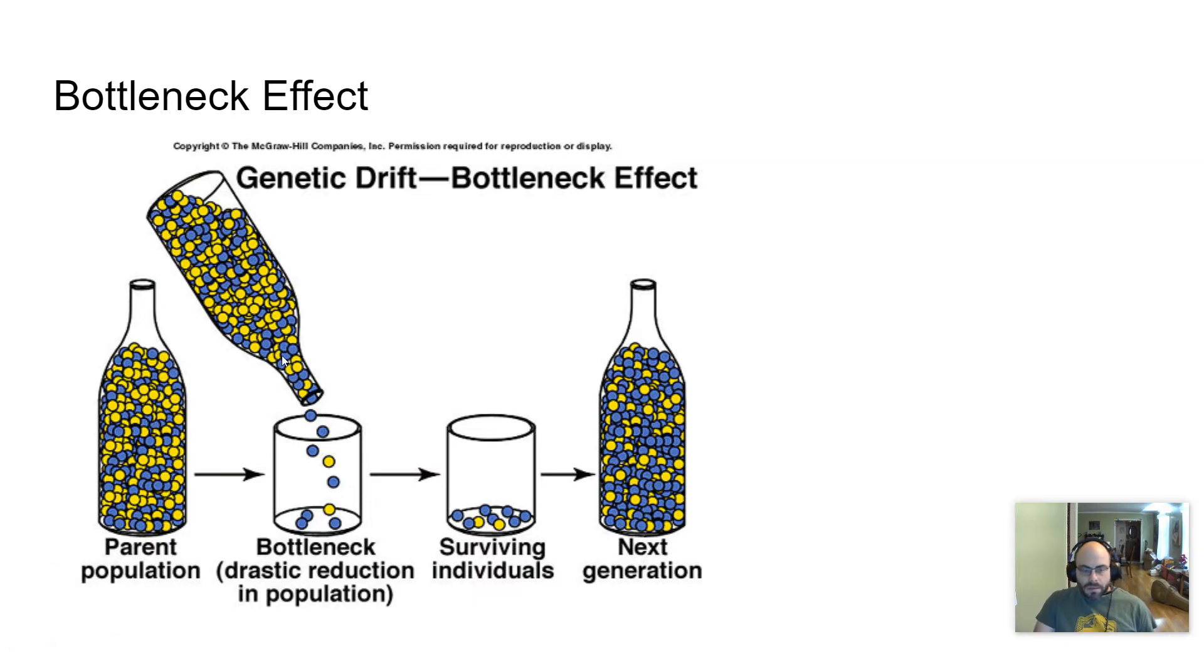If this particular bottle is 50% blue and 50% yellow, and then you just pour some out, that population that is representative of a new population is going to completely change the genetic makeup. Notice here, it looks like there's seven and two, so what's 70-20 or 70-30, let's just say to make it easy.